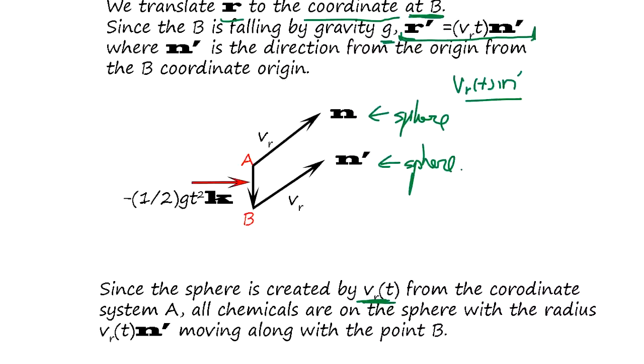Since the sphere is created by Vr(t) from the coordinate system A, all chemicals are on the sphere with a radius Vr(t) moving along with the point B. So the shape of the sphere is maintained.